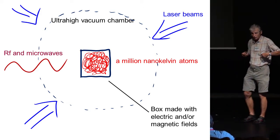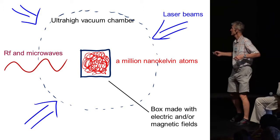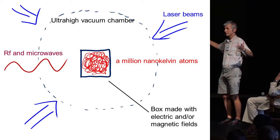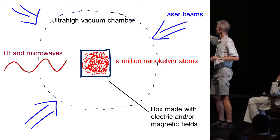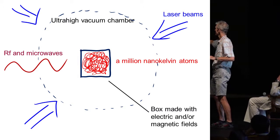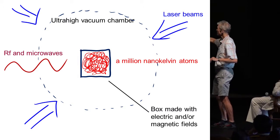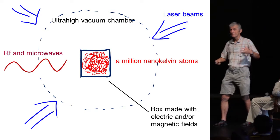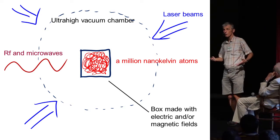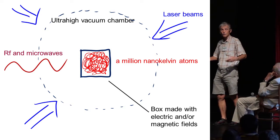When we create new forms of matter with cold atoms, this is my cartoon of the experiment: we have many cold atoms in an atom trap and then we use many laser beams, radio frequencies and microwaves to create a new form of matter.